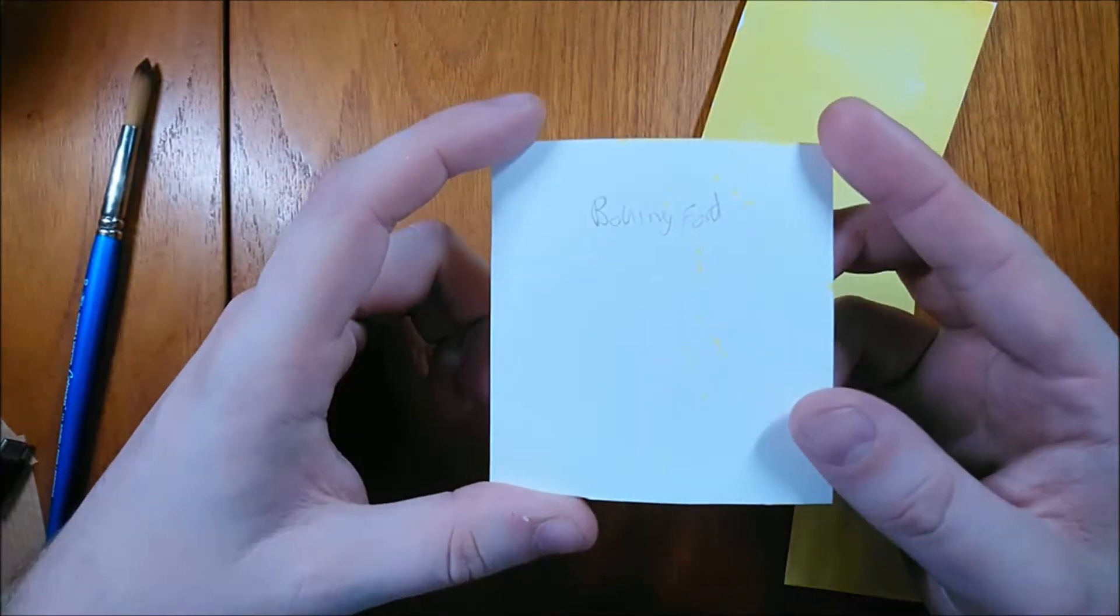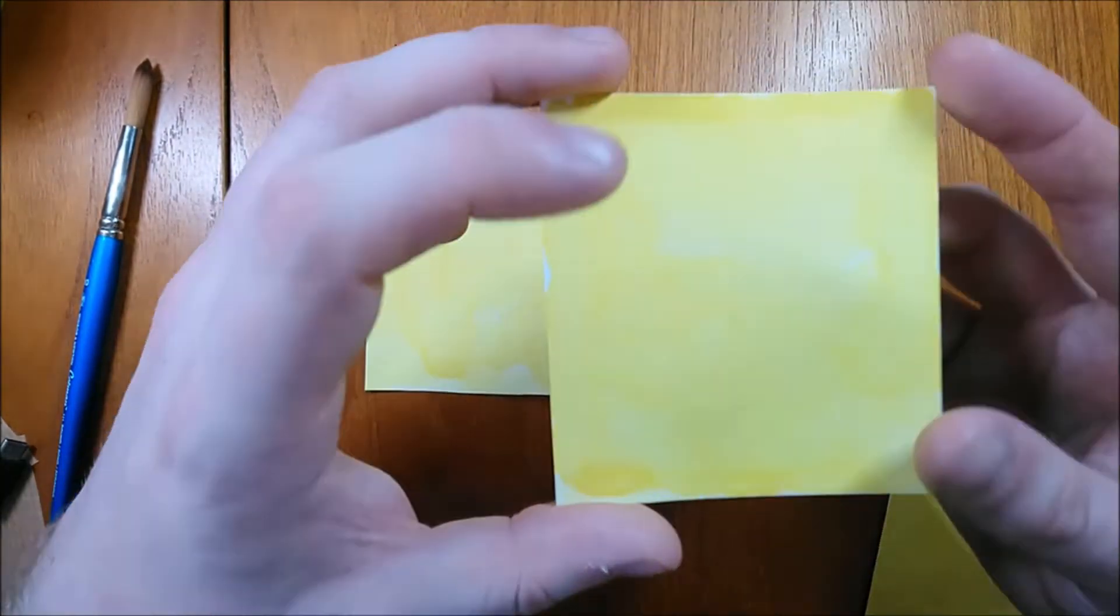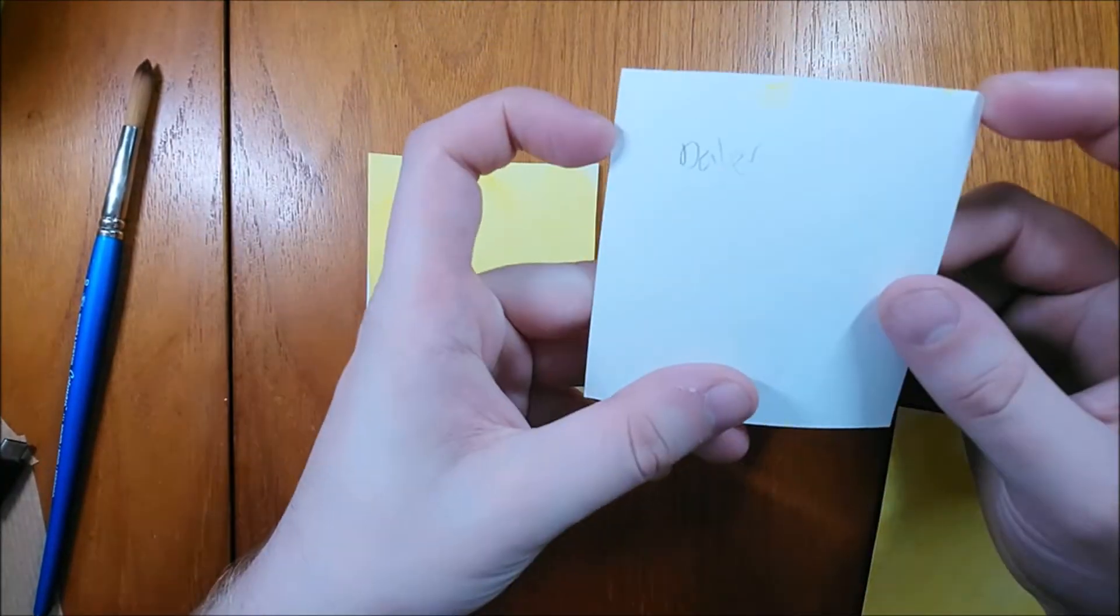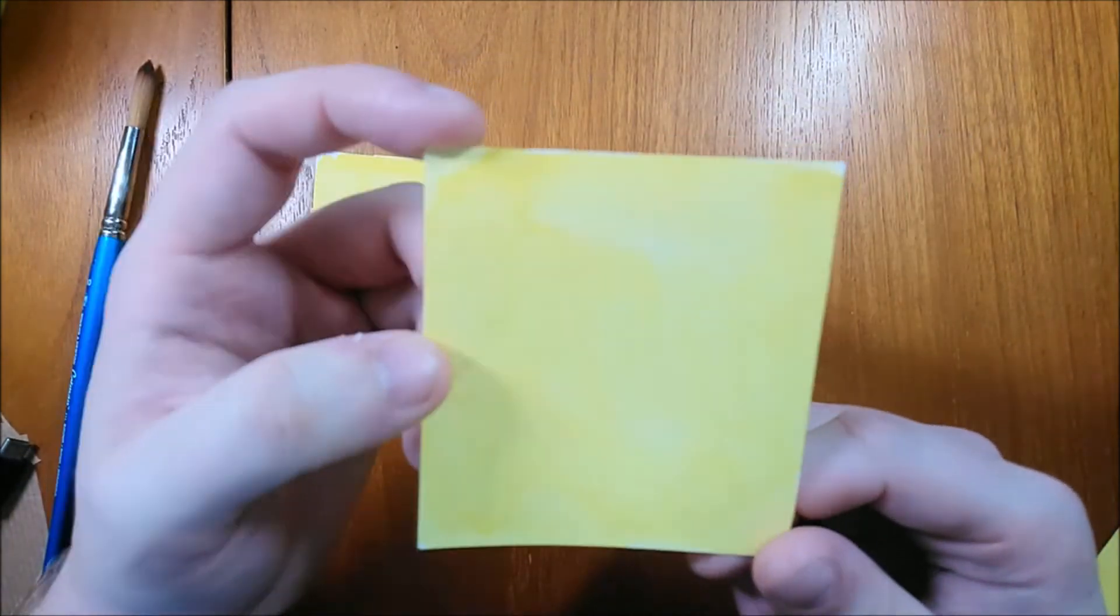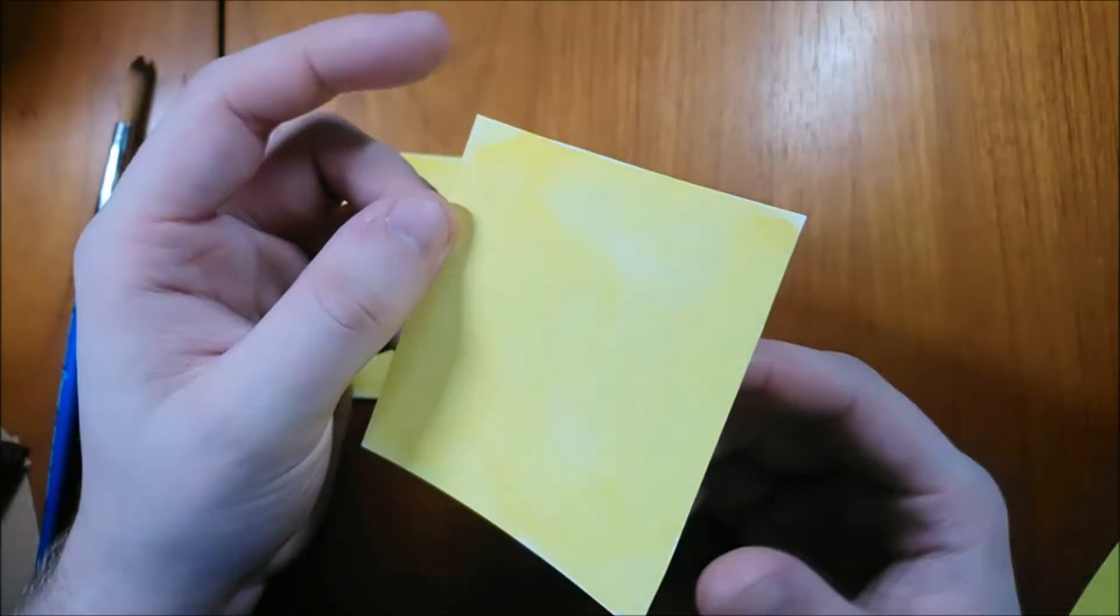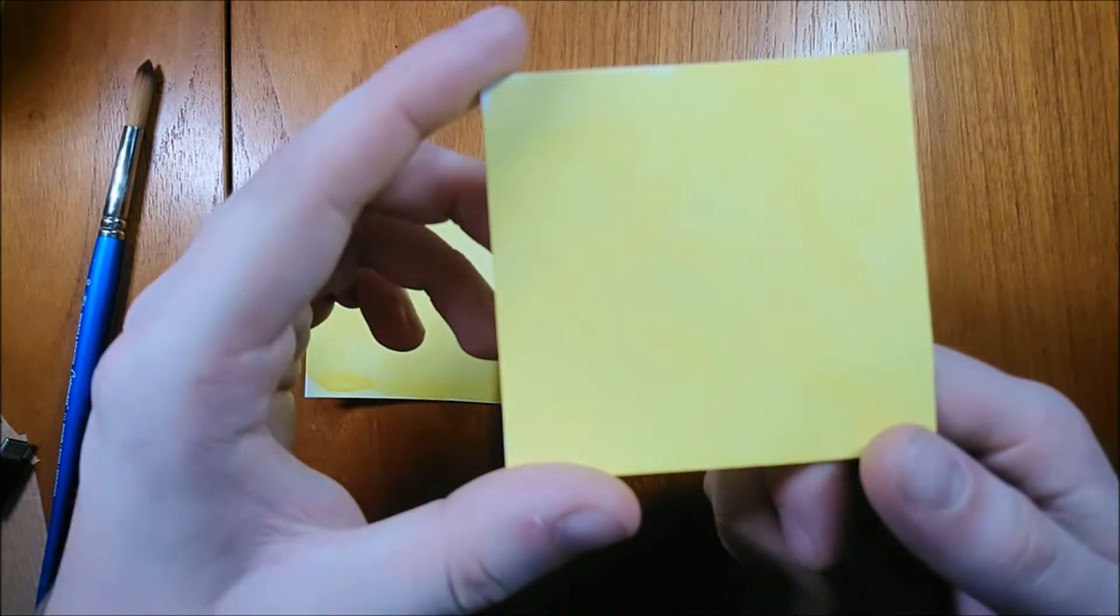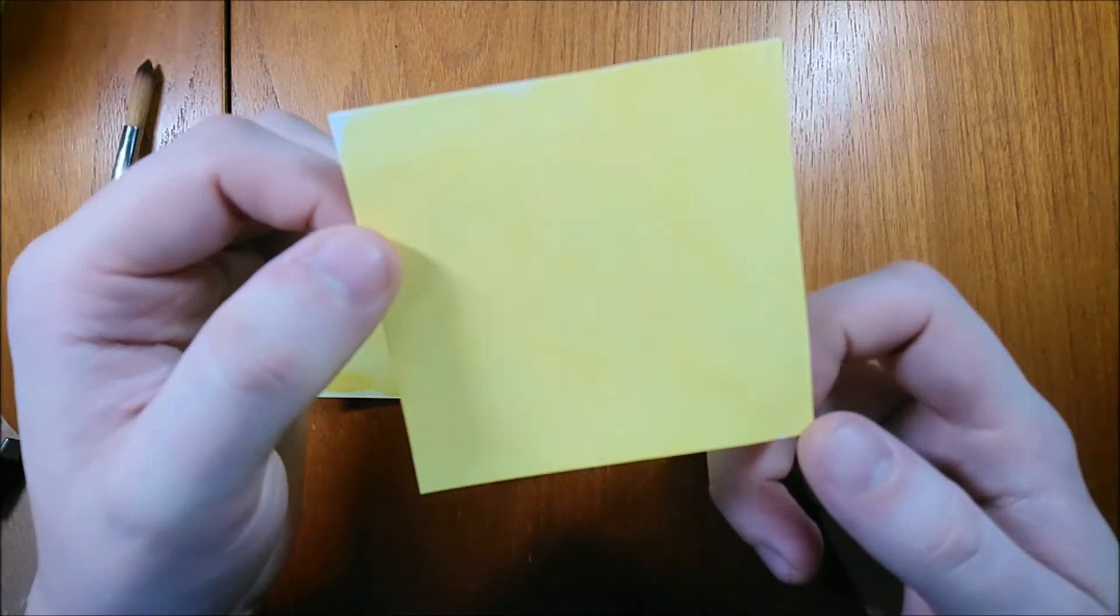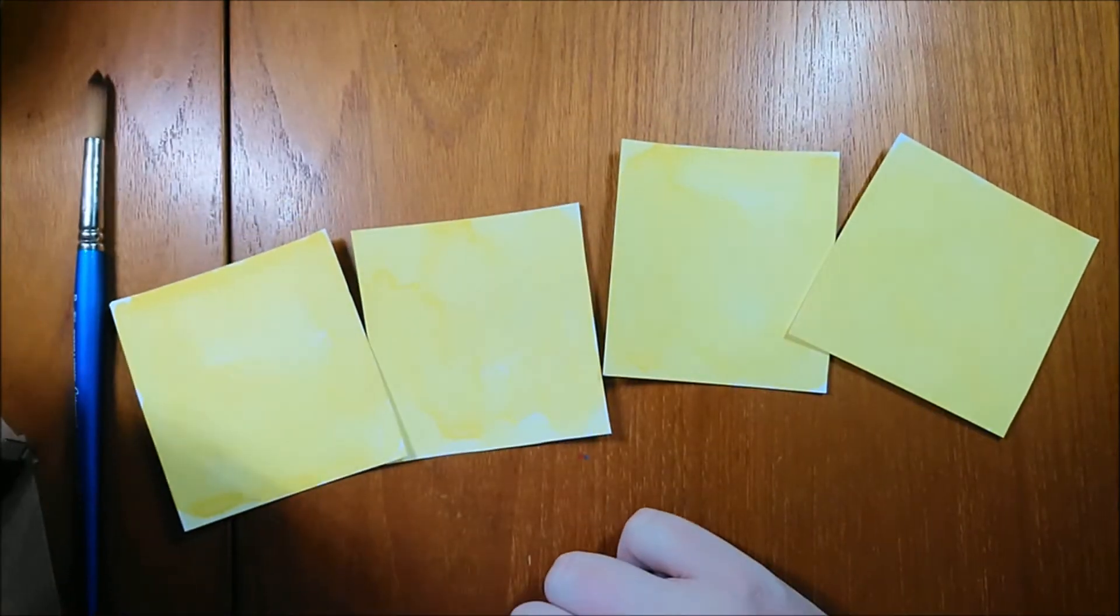So this one here is the Bockingford. There is some warping, but it's not quite as much as the Daler-Rowney one, which is this one that's really warped. As well, with regard to the color, you can see there's a lot more backruns and the color's not as smooth overall in general. The Saunders 100% cotton did better, and there were less backruns and the color does look a lot smoother on it, and it didn't warp hardly as much. I think one corner rose a little bit, but other than that, the paper is pretty flat.